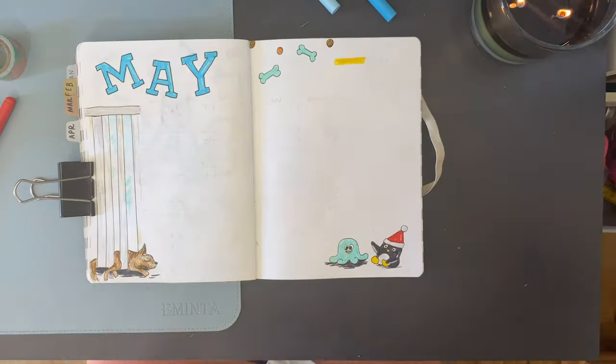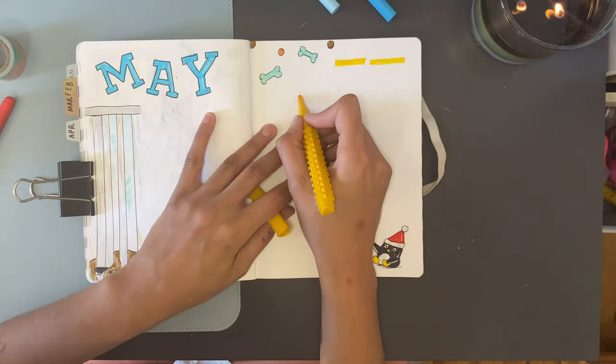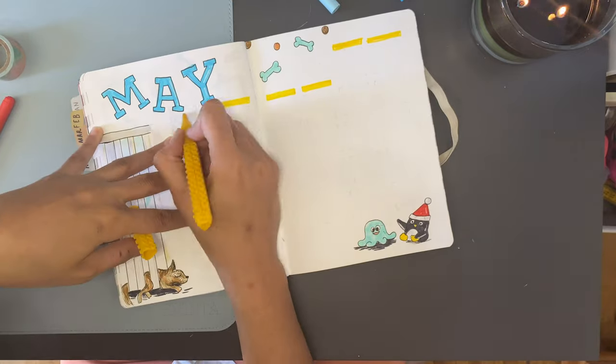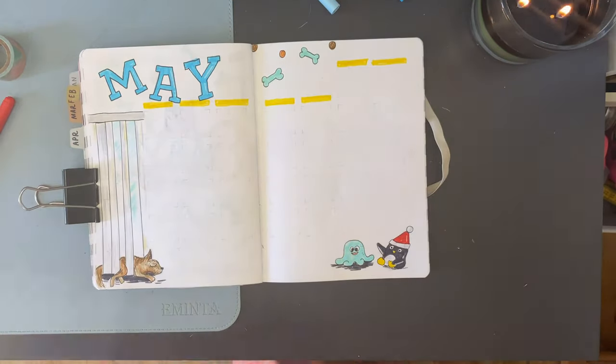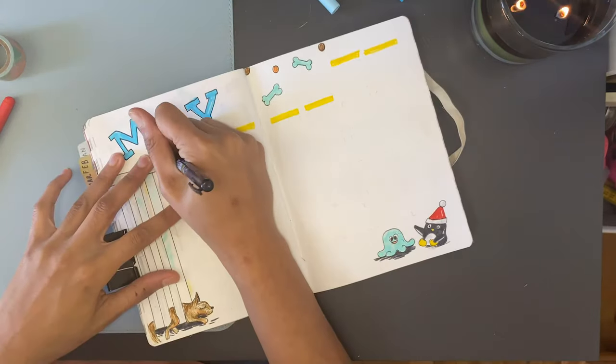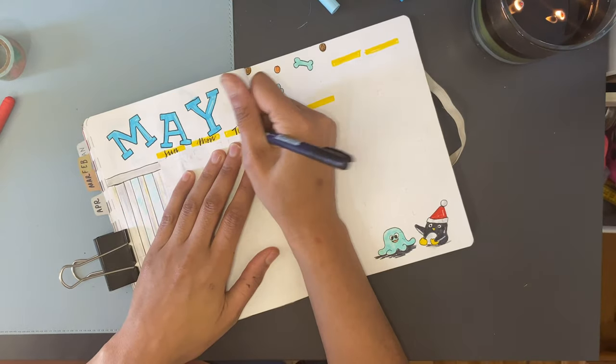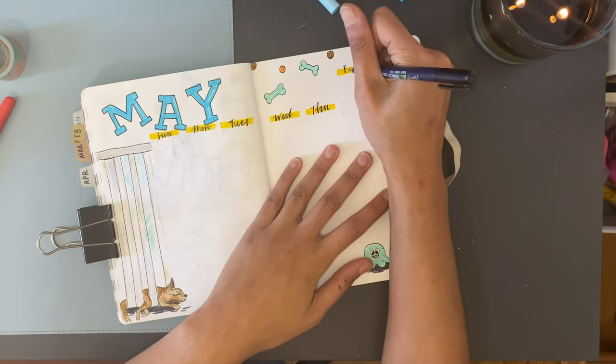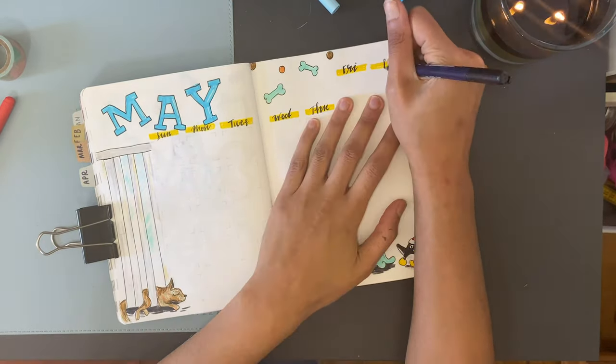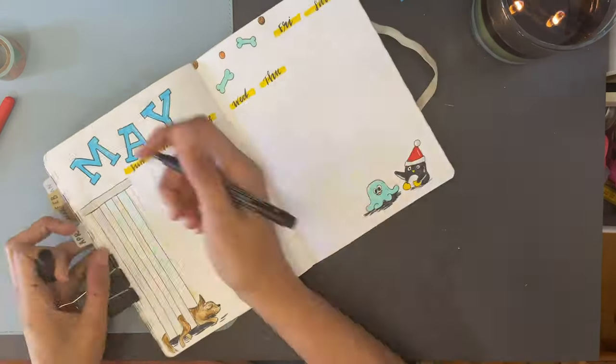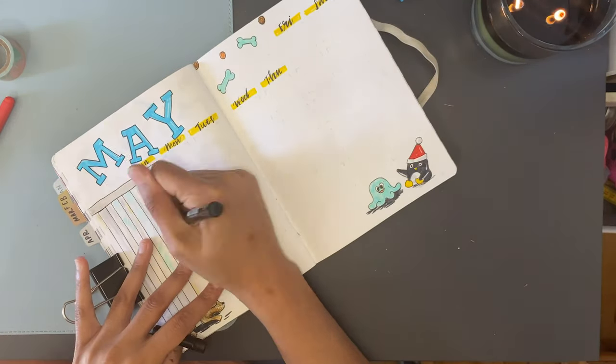I'm blocking out the days with the yellow Artline Stix marker and I love how bright this color is on the page, then lettering the days of the week with my Tombow Fudenosuke hard tip marker. Love this for smaller lettering sections because I just get a little bit more control and it's not too terribly thick even when I press down super hard on it.